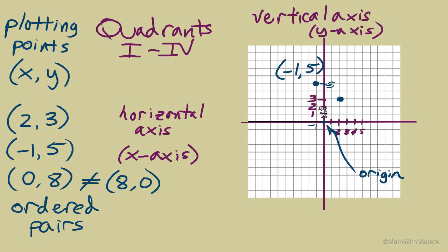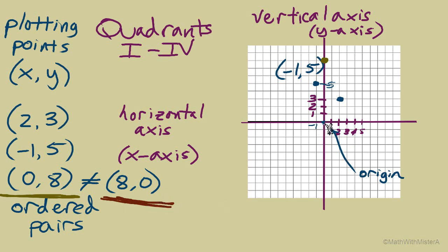A point like (0, 8) means starting at the origin we move horizontally 0 units — not at all. The x-coordinate is 0, so we don't move on the horizontal axis; we go right to the vertical coordinate, 8, and move up 8, plotting the point right on the vertical axis. Compare that to (8, 0): from the origin, the first coordinate is 8, so we move to the right to positive 8, but the vertical coordinate is 0, so we're not moving up at all — we plot a point right on the horizontal axis.